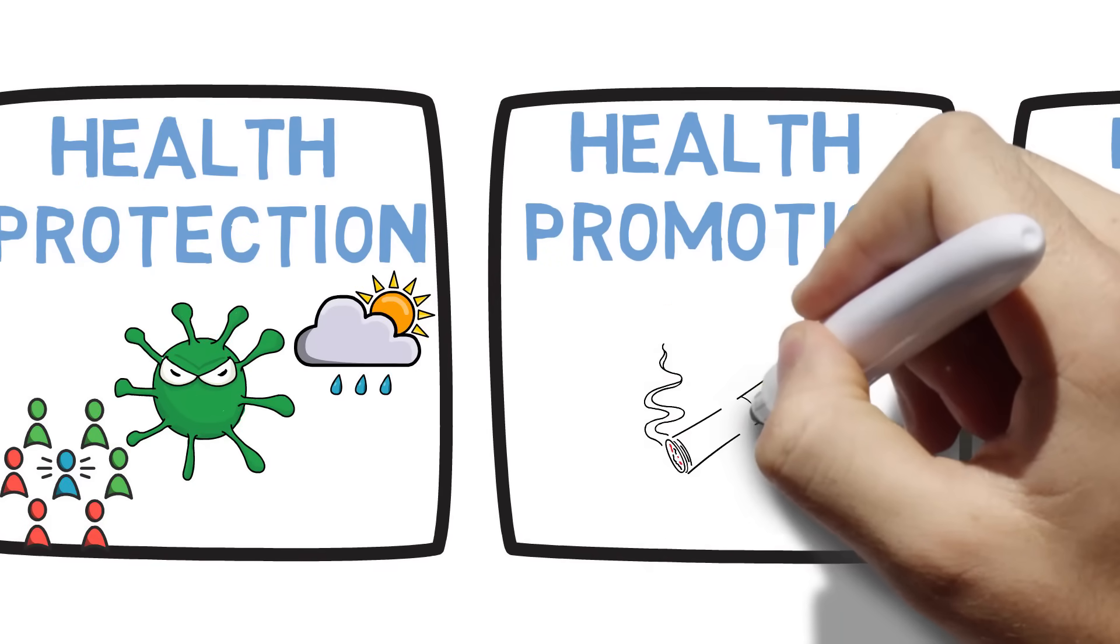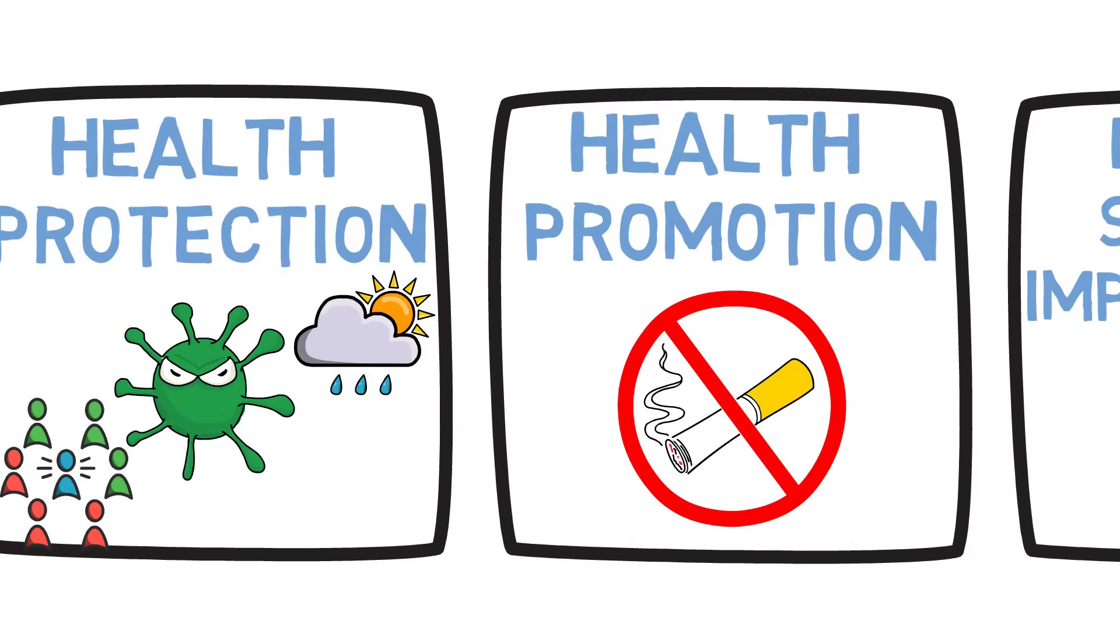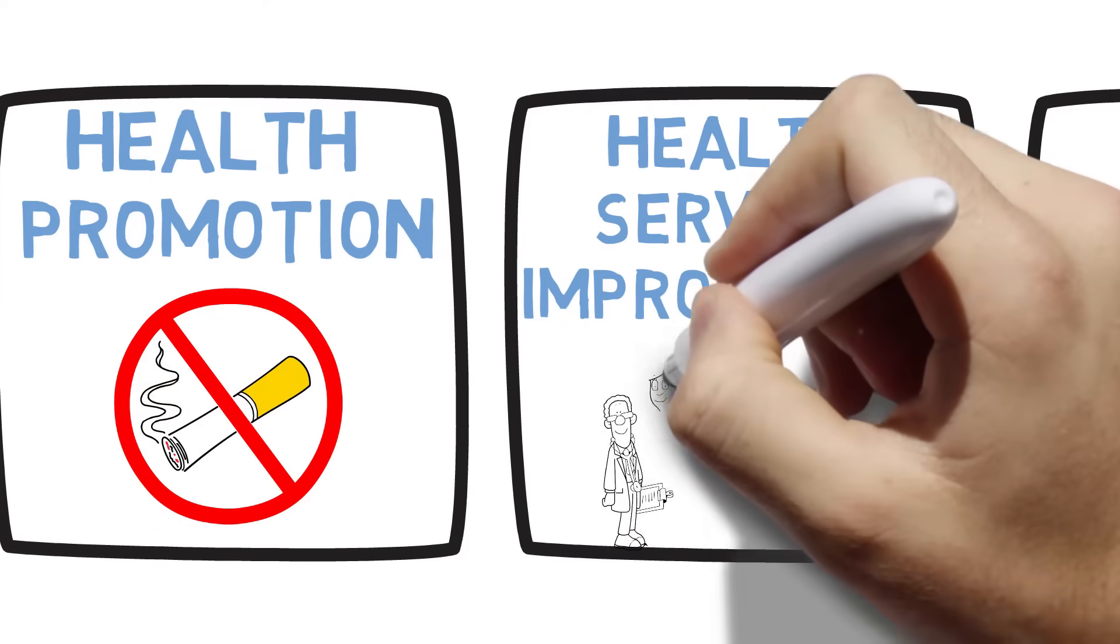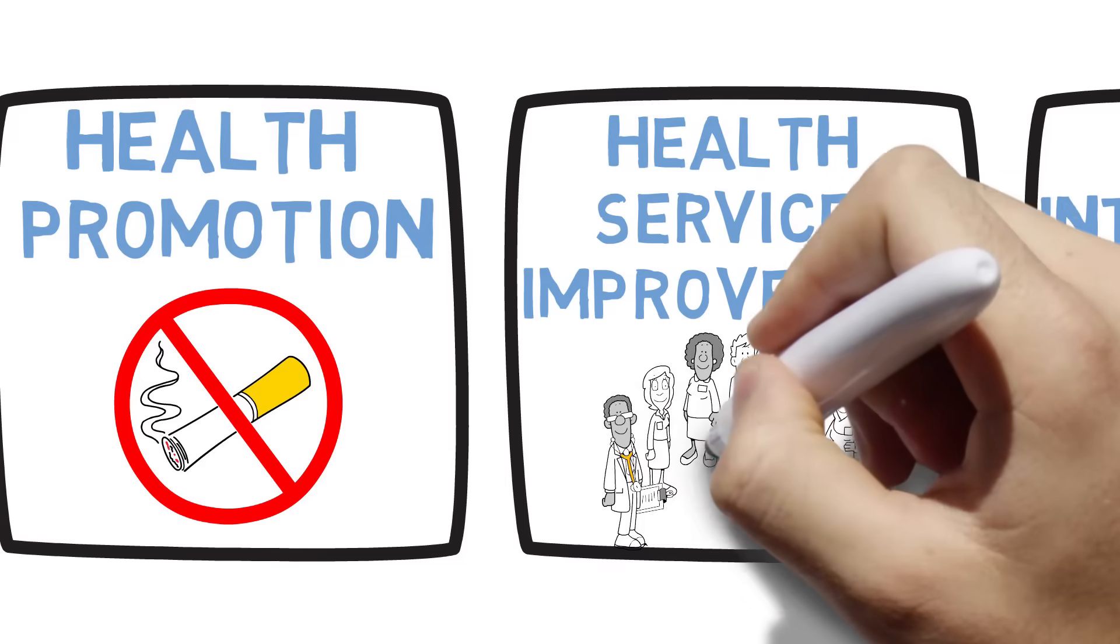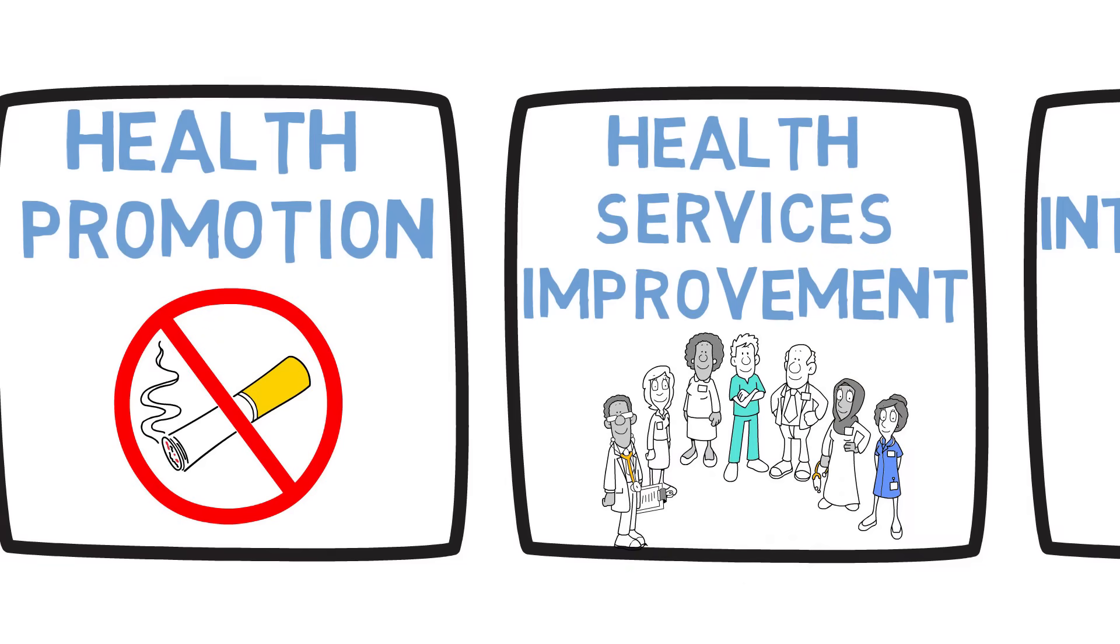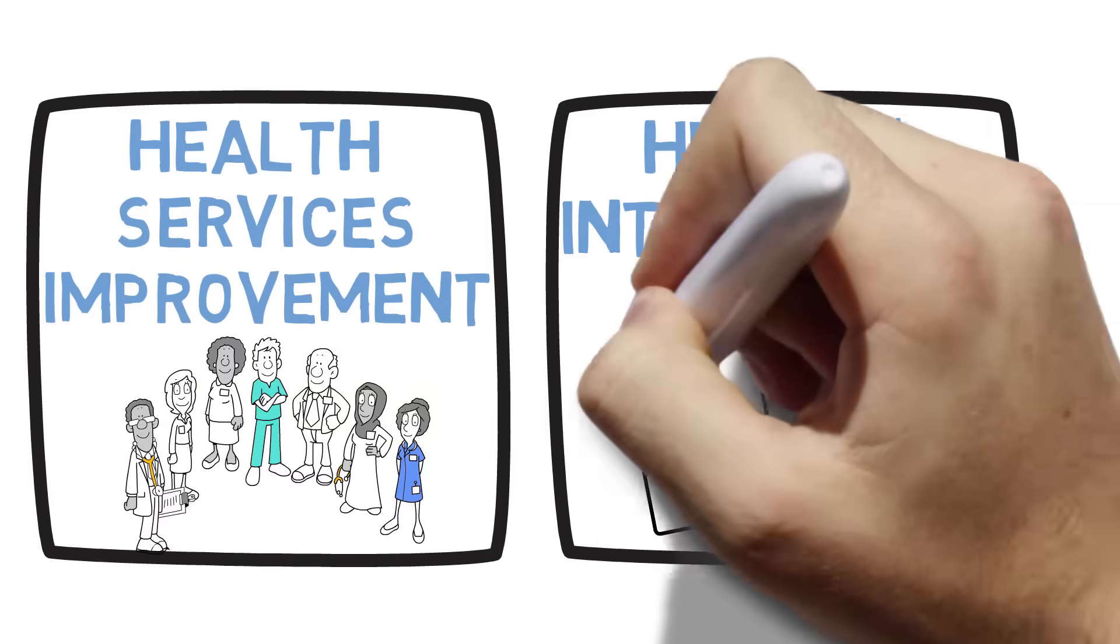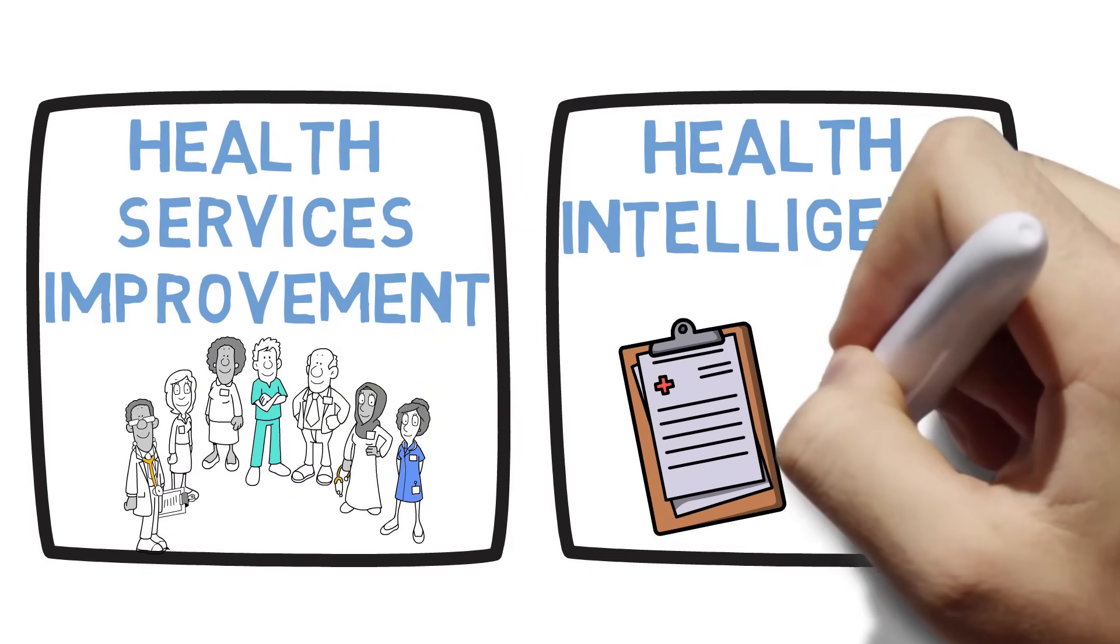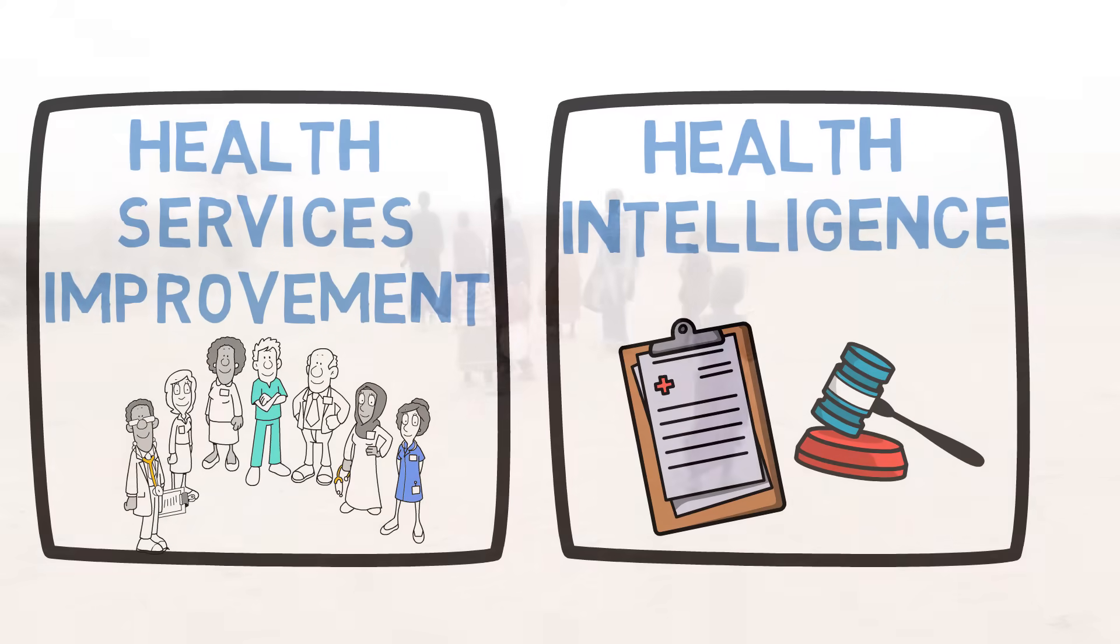Health promotion or health improvement addresses how to enable and facilitate healthy choices like smoking cessation. Health services improvement focuses on how to deliver health care. Issues dealt with here are how to ensure that health care is provided to the most vulnerable and hard-to-reach people in the community. And health intelligence is about how to use data to inform public health actions and health policy.